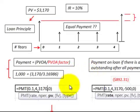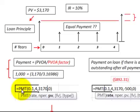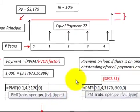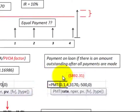We can also use an Excel function or a financial calculator to do this. In Excel, we'd use the PMT payment function and enter the interest rate, number of periods, and present value — and from that we can determine the payment amount.